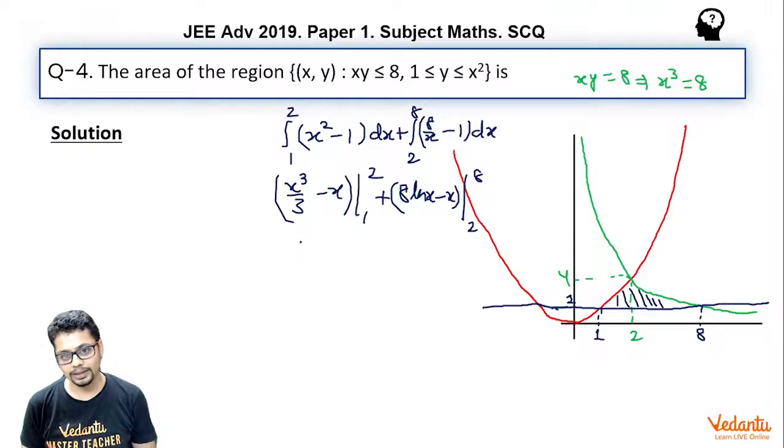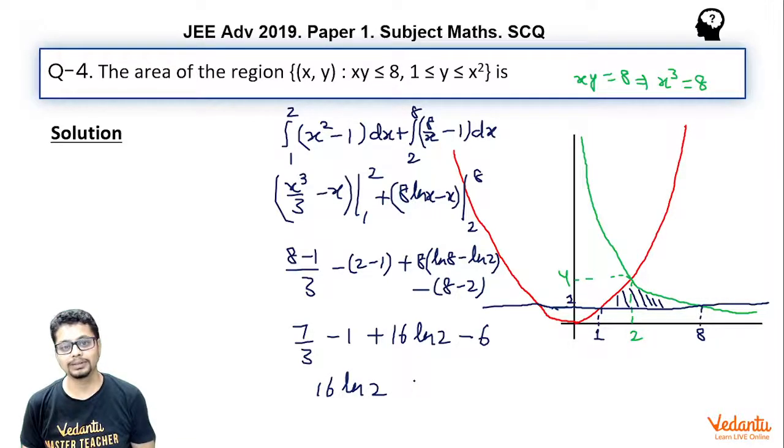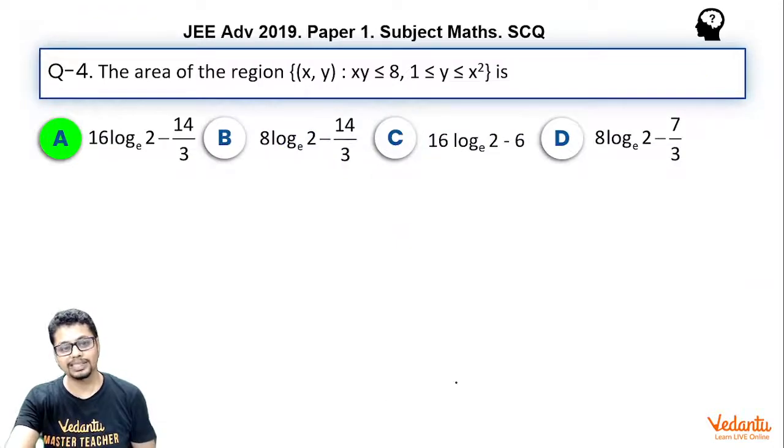So essentially it becomes x³/3 - x with limits 2 to 8. So as you put, you get 8 - 1/3 - 2 - 1 putting the limits, plus you get 8 ln 8 - 8 - 8 ln 2 - 2. So essentially if you see carefully, it becomes 7/3 - 1 + ln 8 is 3 ln 2 minus ln 2, it becomes 2 ln 2. So essentially it becomes 16 ln 2 minus 6. 7/3 - 7 is essentially -14/3. So my answer becomes 16 ln 2 - 14/3. A is correct.